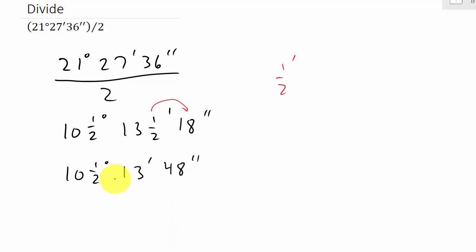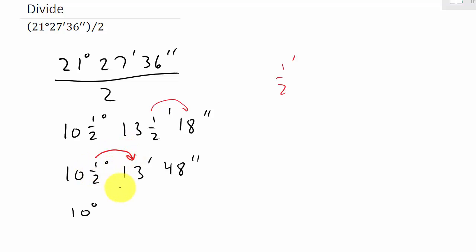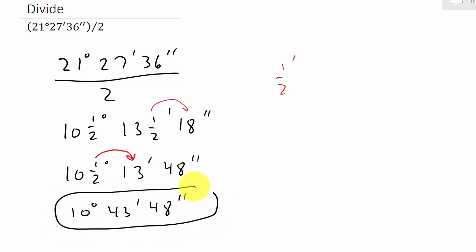Now I'll do the same with the half degree and move it to the minutes. That gives us 10 degrees. Remember, 1 degree is 60 minutes, so half a degree is 30 minutes. Adding to the 13 minutes gives us 43 minutes. So the final answer is 10 degrees, 43 minutes, and 48 seconds.